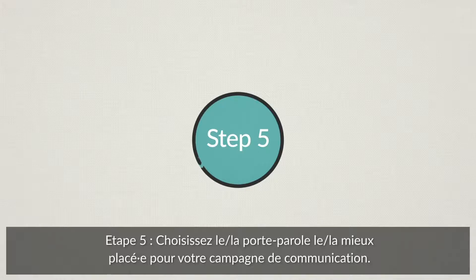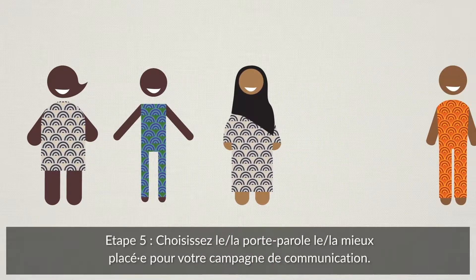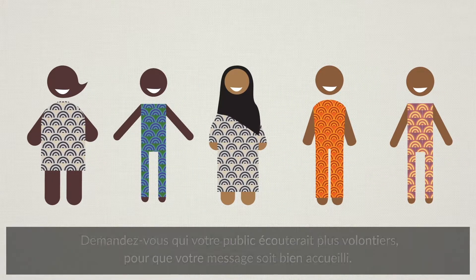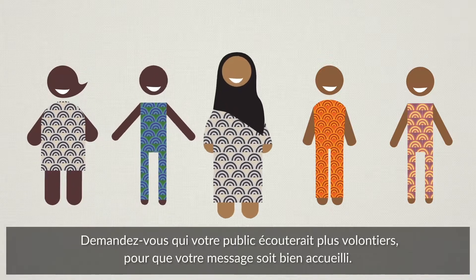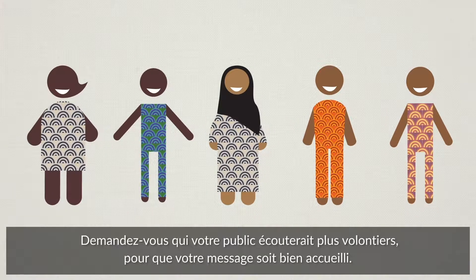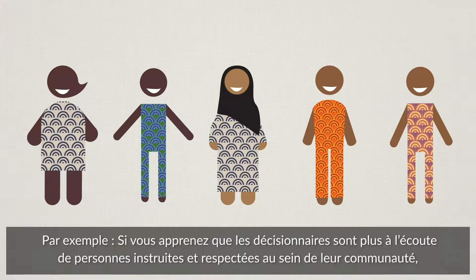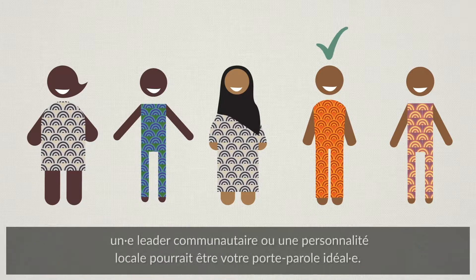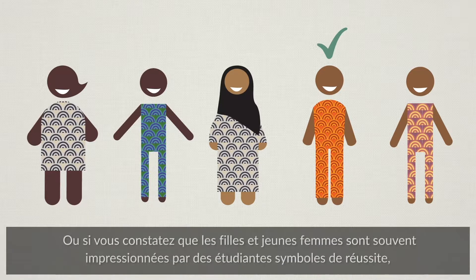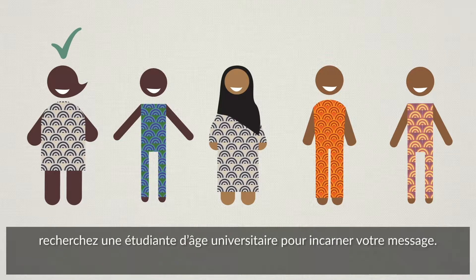Step 5. Choose the most effective messenger for your communications campaign. Analyse who your audience best responds to, to ensure your messages will be well received. For example, if you learn that decision-makers respond best to people who are well-educated and well-respected in their communities, then a community leader or chief might be the best person to deliver the advocacy message. Or, if you learn that young women and girls look up to successful university-aged women, look for a strong advocate who is a university student to be your messenger.